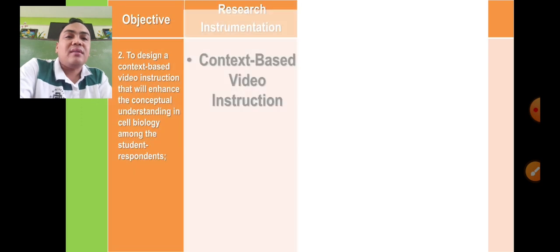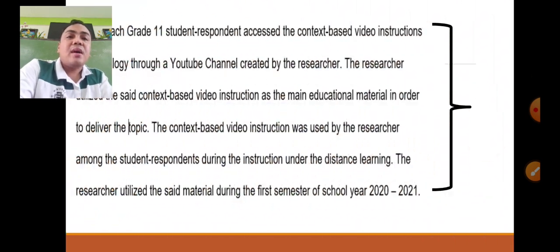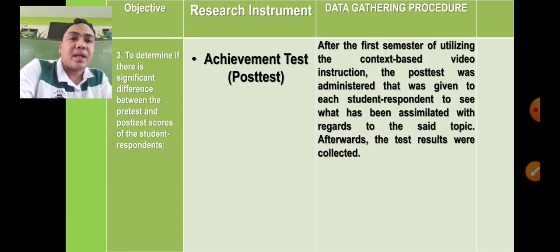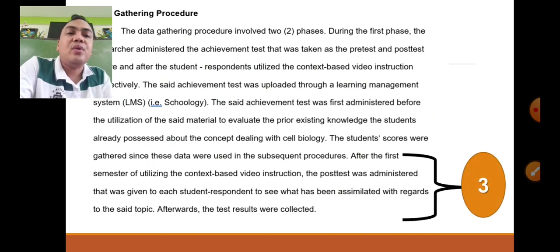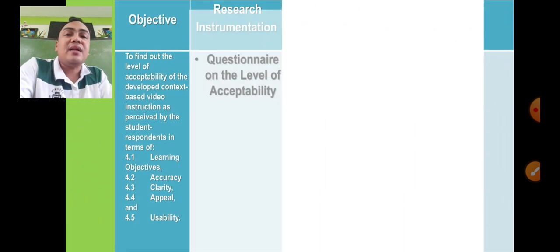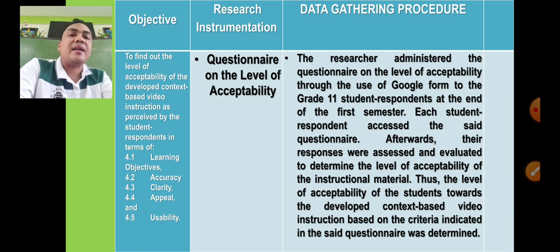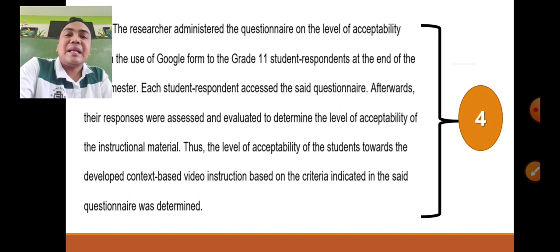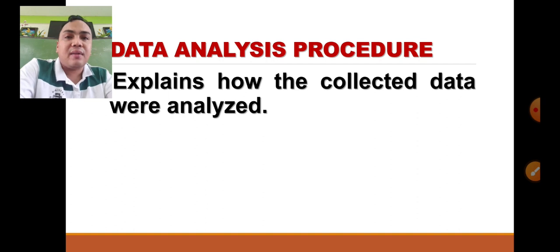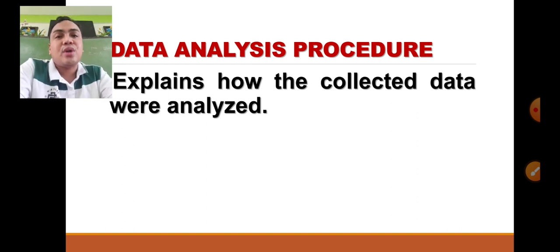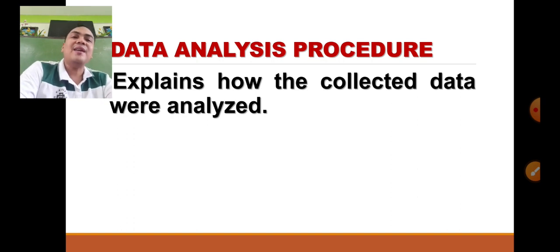Provide data gathering procedure for each objective and convert it into paragraph form. Every time you write your data gathering procedure, it must be per objective — each research question or objective should have a corresponding data gathering procedure. This makes it more detailed and adoptable by other school communities. After the data gathering procedure, proceed to data analysis, which explains how the collected data were analyzed.